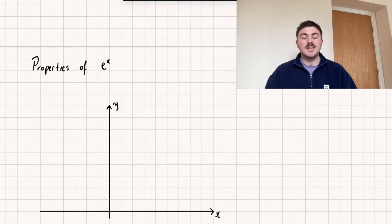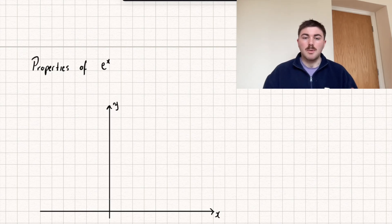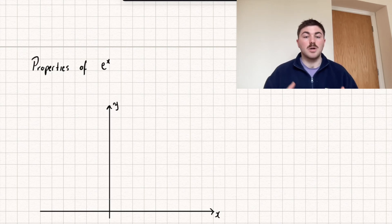In this video we're going to be taking a look at the properties of the graph y equals e to the power of x. We're going to start off by sketching this graph and seeing what it looks like, and then we'll talk about the gradient of this graph at different points. I'll timestamp the different parts of the video so you can skip through, and if you find it useful, go over to my channel where I have loads of other maths tutorials.